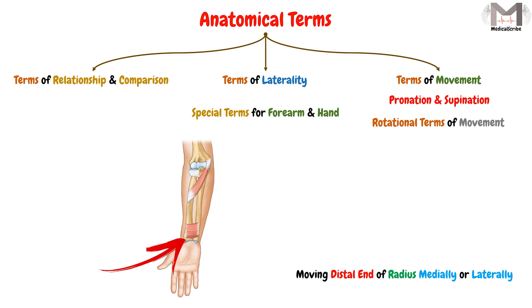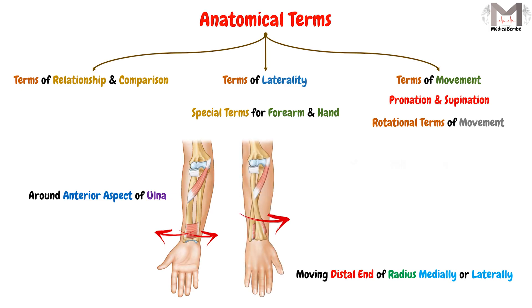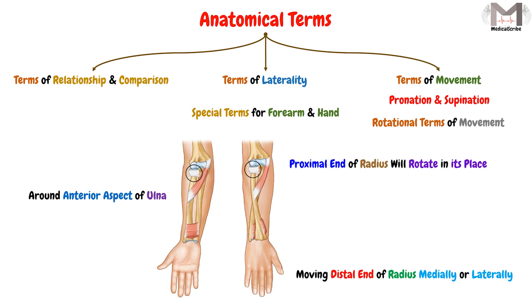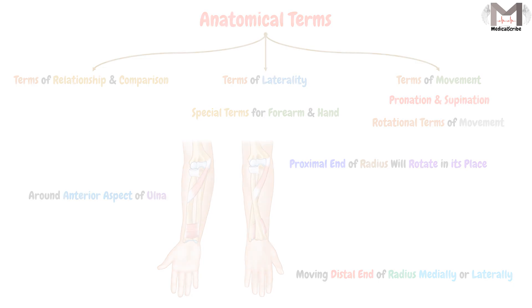These two movements generally occur when moving the distal end of the radius medially or laterally around the anterior aspect of the second bone of the forearm, which is the ulna, while the proximal end of the radius will rotate in its place.